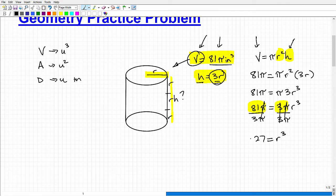And now I just need to take the cube root of both sides. In other words, what number times itself 3 times is 27? Obviously, that's going to be 3. So R is equal to 3.